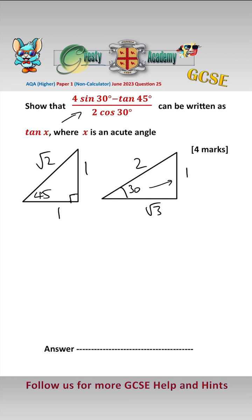So sine of 30, well 30 is opposite over hypotenuse, so 4 sine of 30 is 4 times a half, minus, well tan 45 is opposite over adjacent which is 1, over 2 cos of 30. Well cos is adjacent over hypotenuse, so that's over 2 times root 3 over 2.